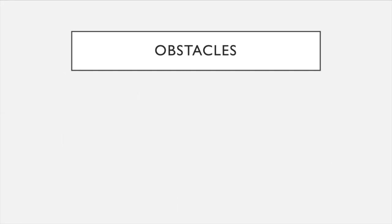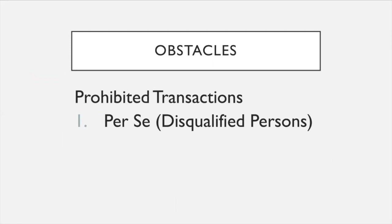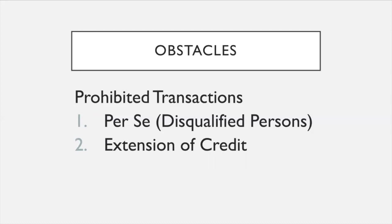There are some obstacles to be aware of and avoid — we call them prohibited transactions. There are three. The first prohibited transaction is called per se, which outlines who you can and cannot do a deal with using your self-directed retirement account. The second prohibited transaction is extension of credit: your self-directed retirement account cannot guarantee a loan — if there has been an extension of credit, it is considered a prohibited transaction.